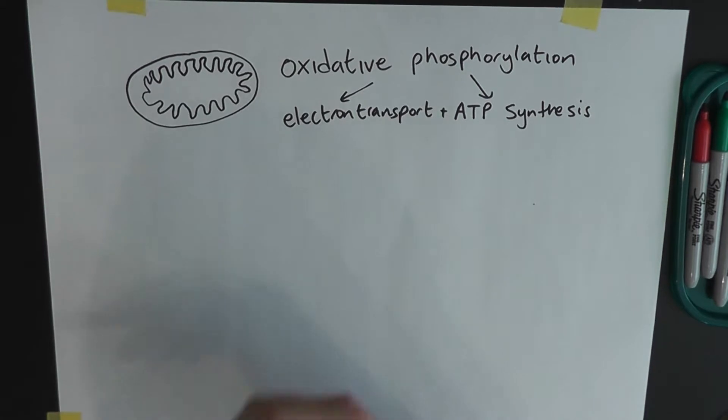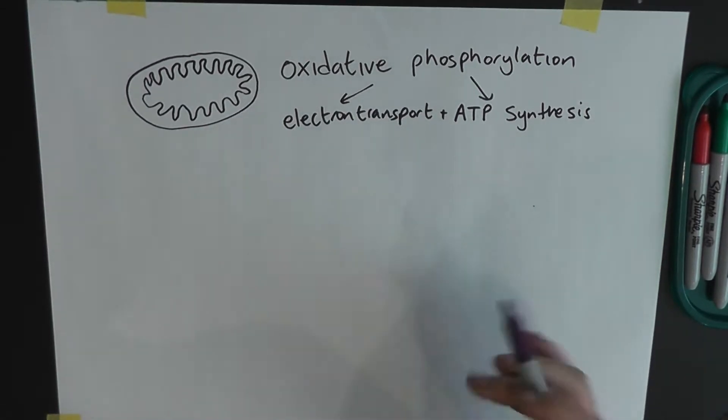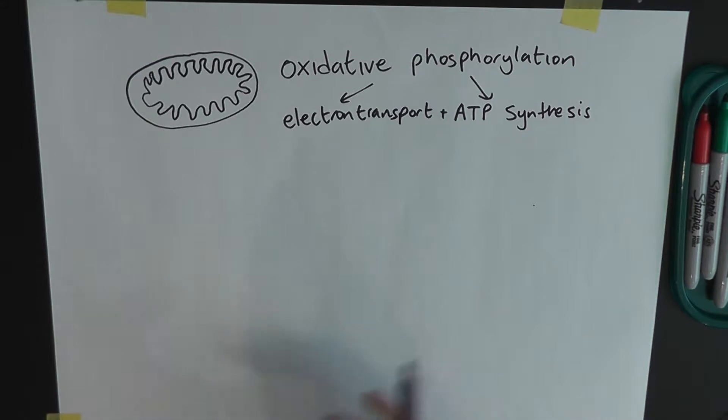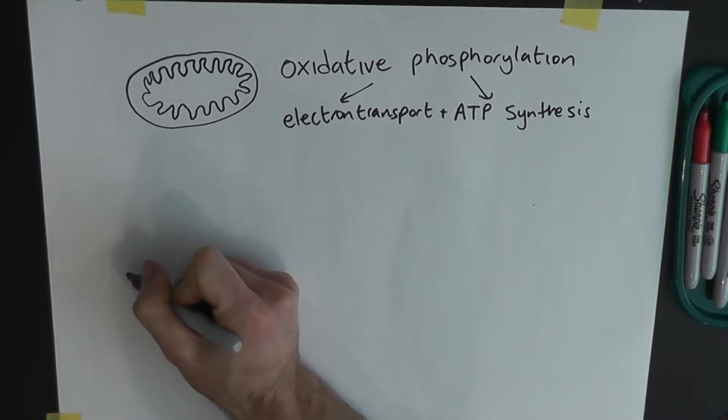And the most important thing, if you watched one of my previous videos called What is the point of the Krebs cycle? The most important thing that comes out of the Krebs cycle is something called NADH or reduced NAD.